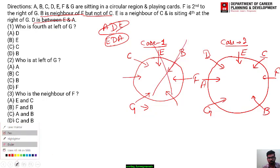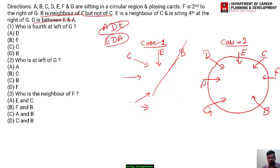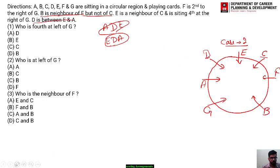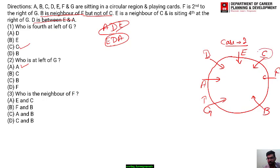With the final diagram constructed, let's solve the questions. Question one: who is fourth to the left of G? G is here, left direction is this way, counting 1, 2, 3, 4 — the answer is option C. Question two: who is to the left of G? Left of G is A, so the answer is A. Question three: who is the neighbor of F? F is here and the neighbors are C and B, so the answer is option D which is C and B.